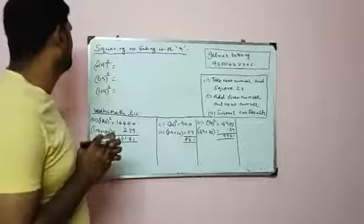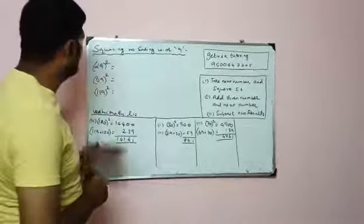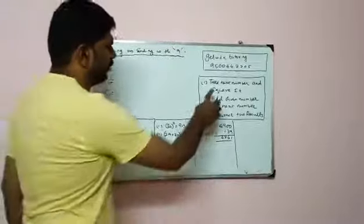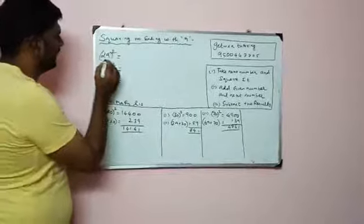Let me take the first example: 29 the whole square. 29 is easy to square. Step 1, take the next number and square it. So 29's next number is 30.